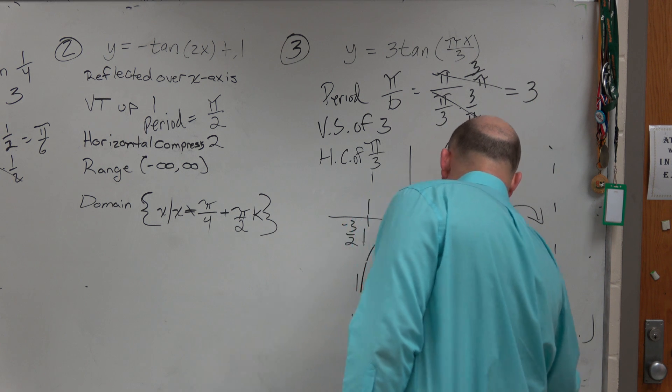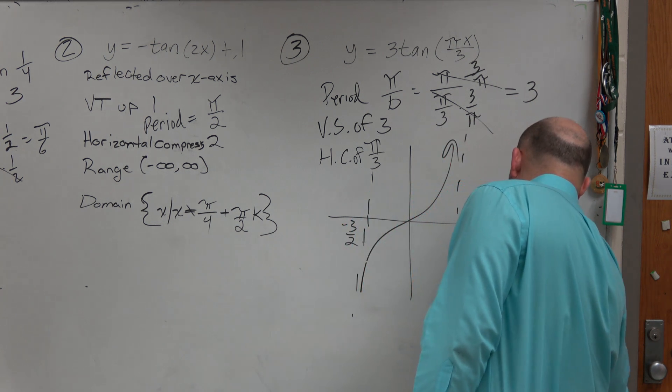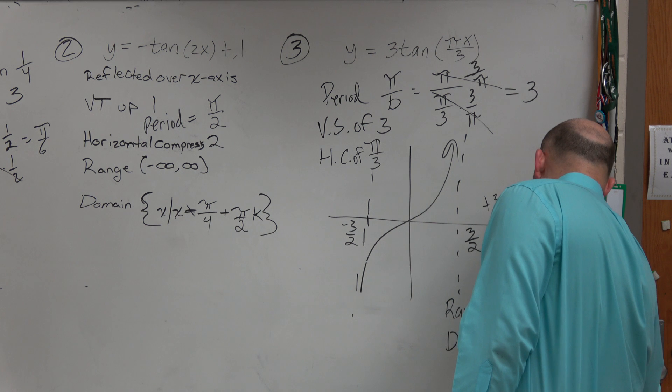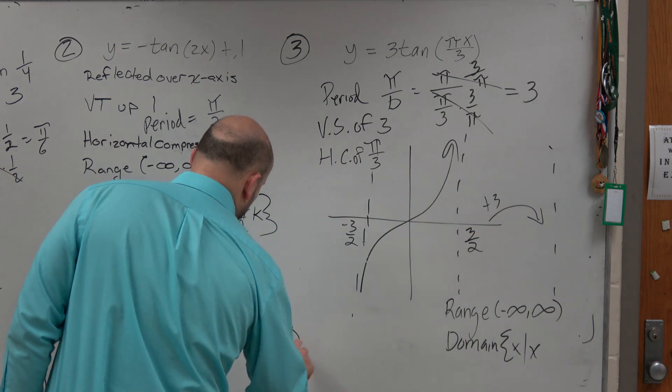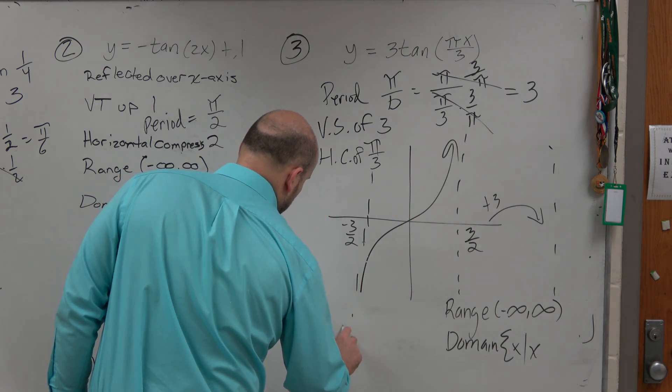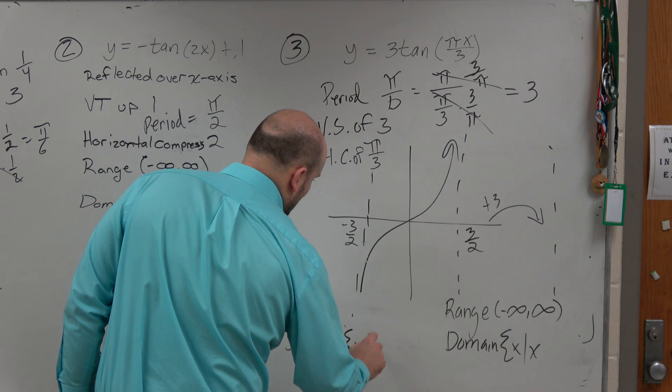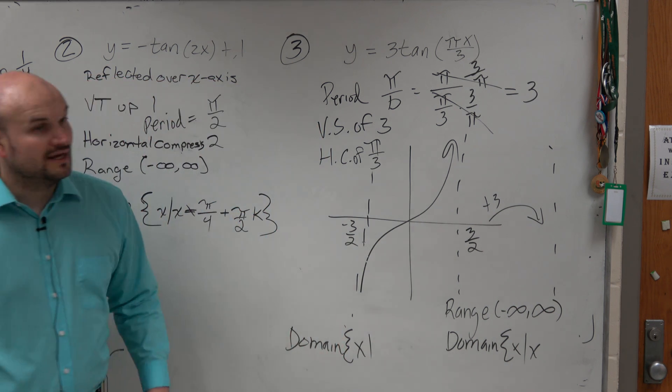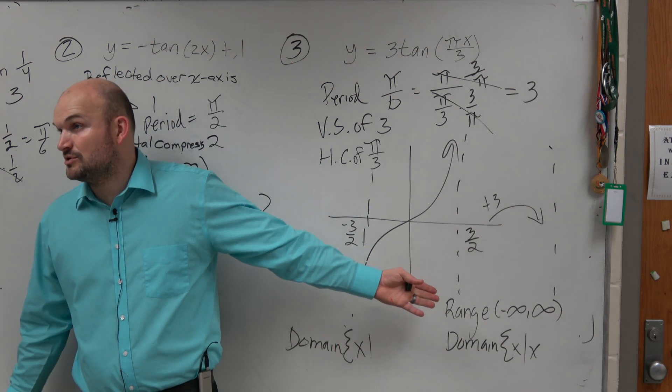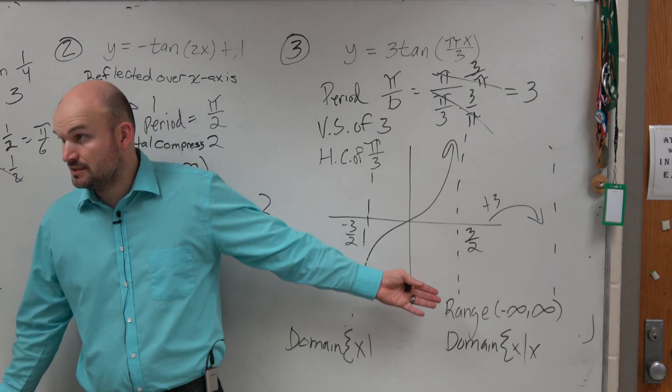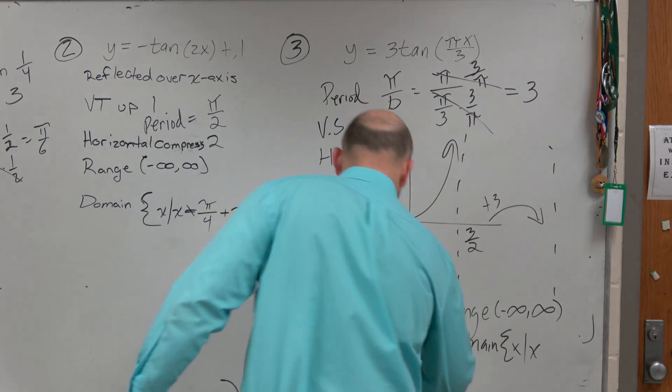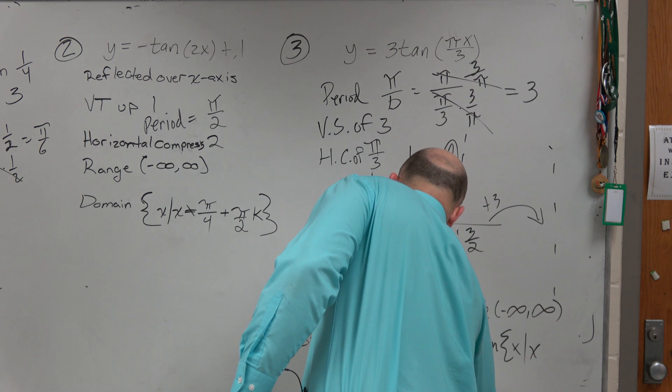The domain, though, let's do this. Let's do it over here. Domain is going to be x such that x cannot equal, where's one of the asymptotes? Where do we know where one of the asymptotes is? 3 halves. So x cannot equal 3 halves.